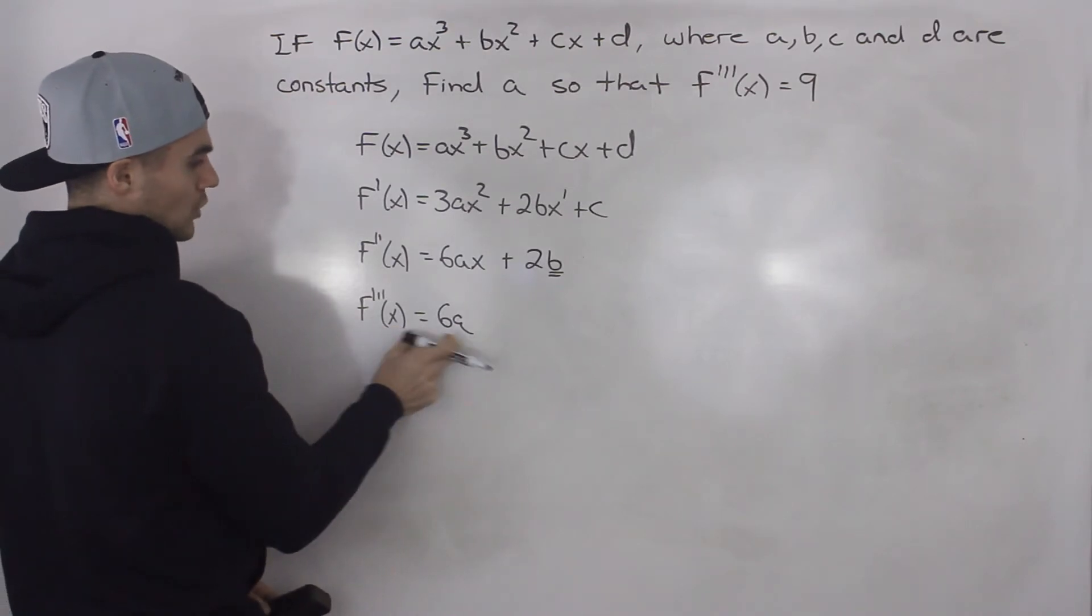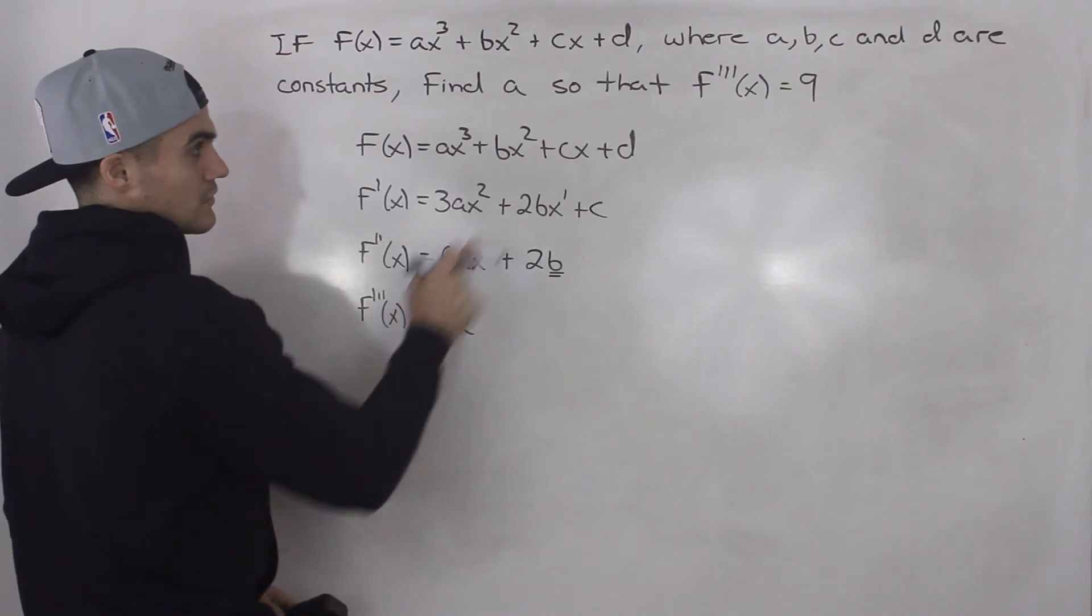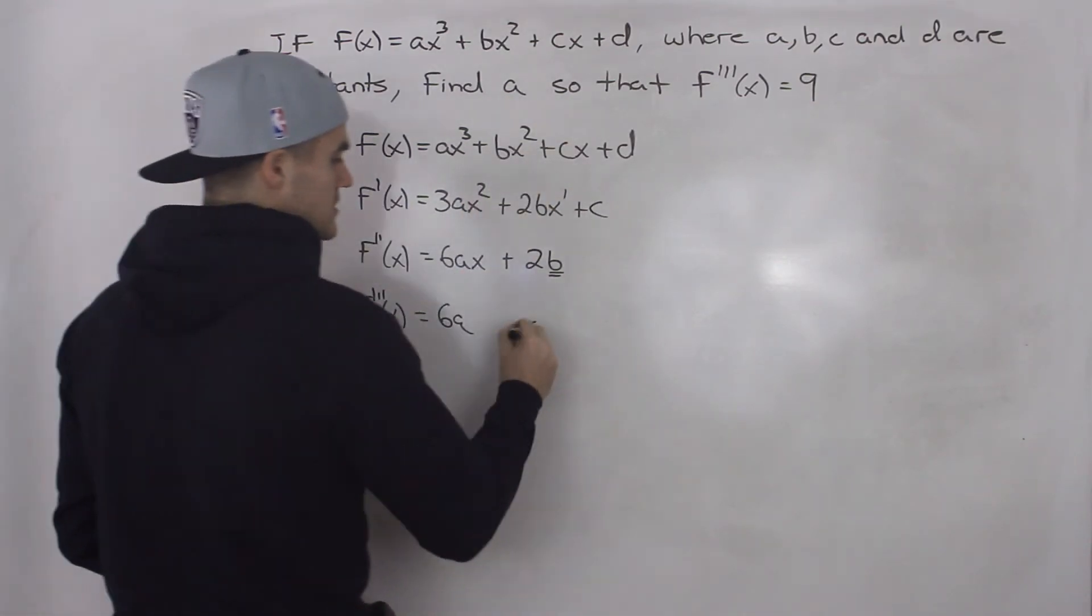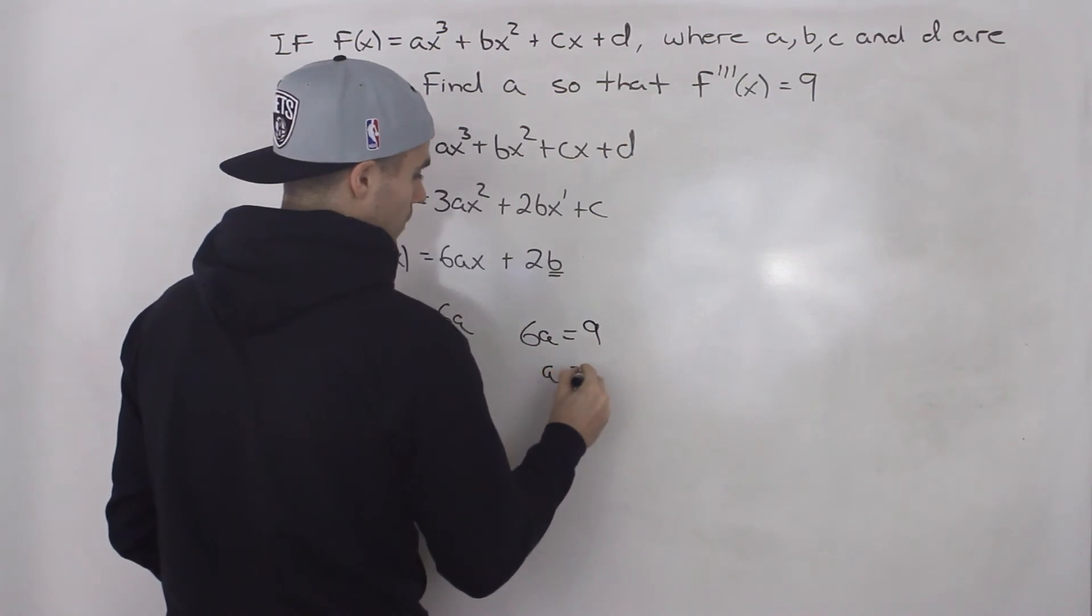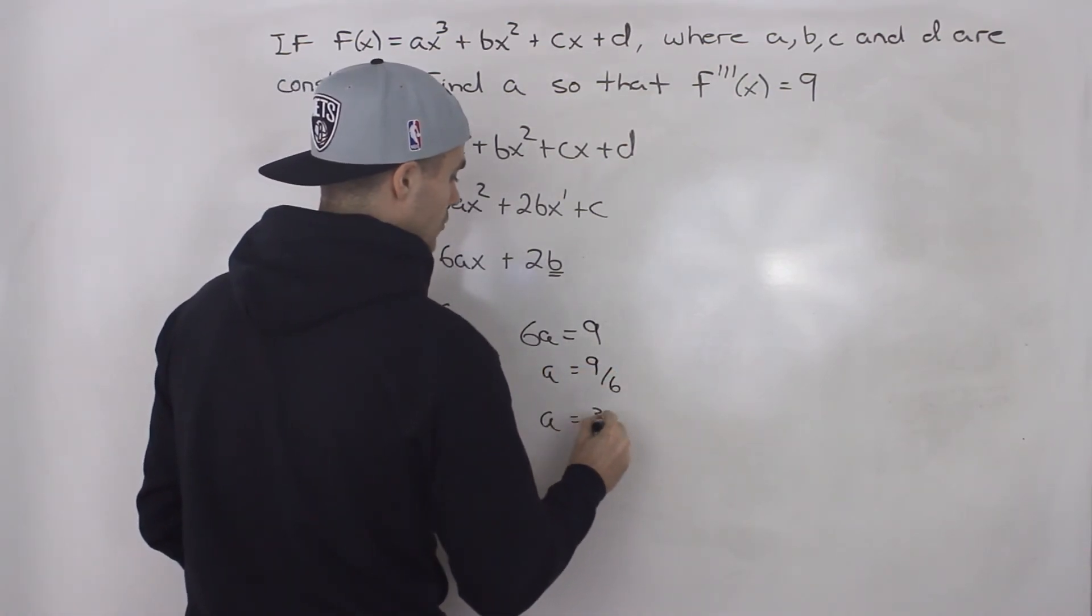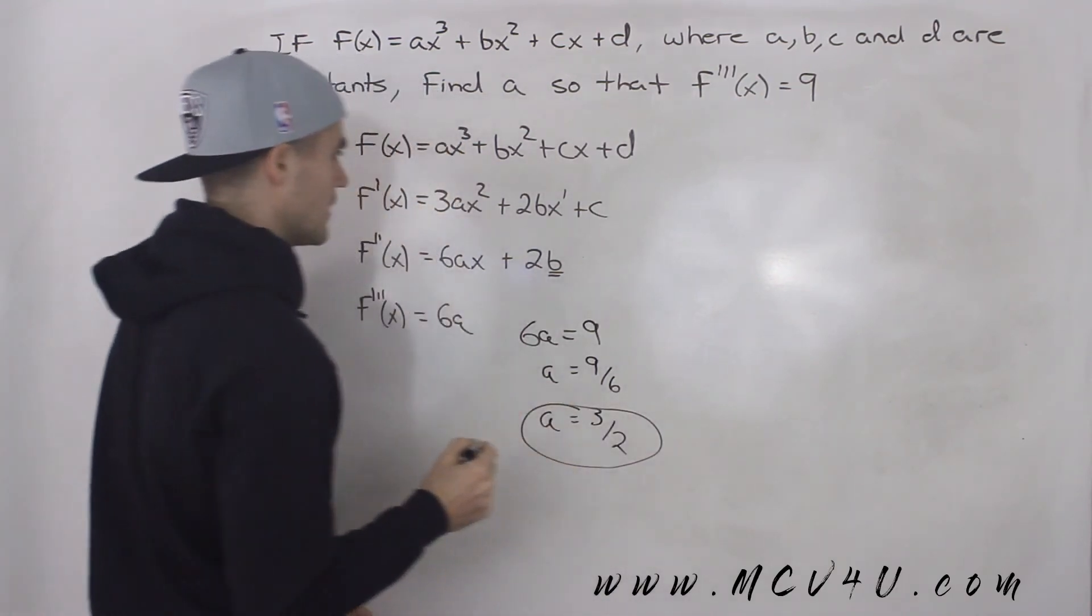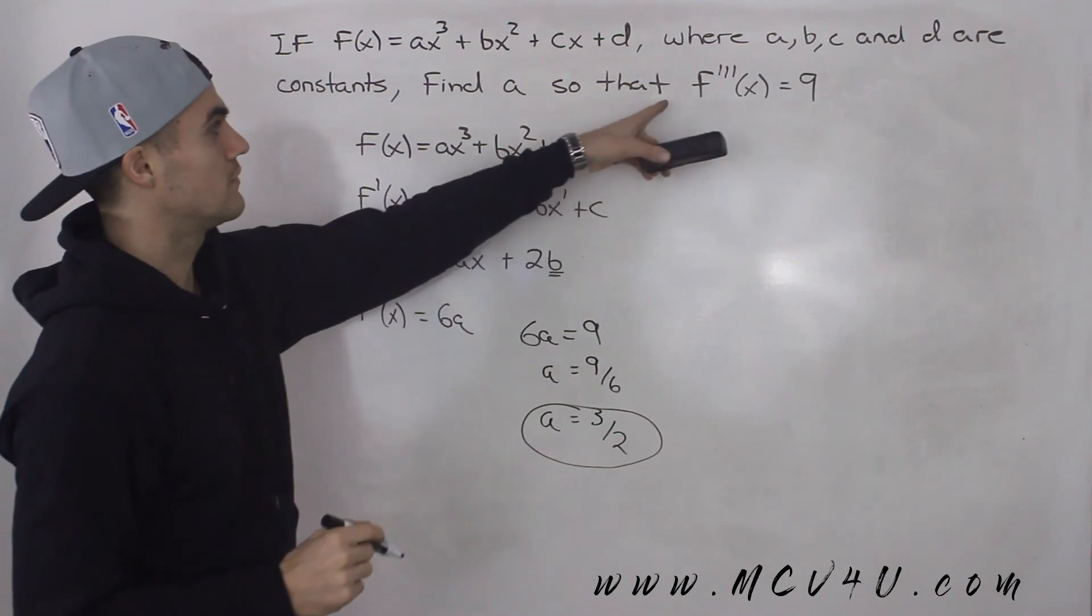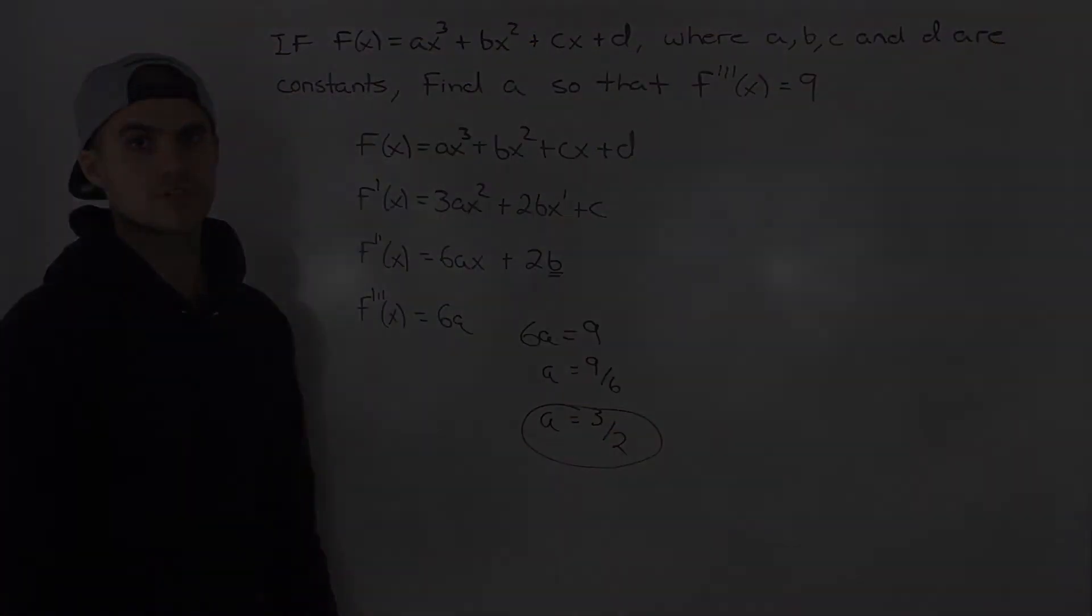The third derivative, we know the general expression is 6a, and we know that the third derivative is going to equal 9. So we know 6a is going to equal 9, and that's going to happen when a is 9 over 6, or if we reduce it, 3 over 2. So that there is the final answer. If the third derivative of this function is 9, then a has to equal 3 over 2.